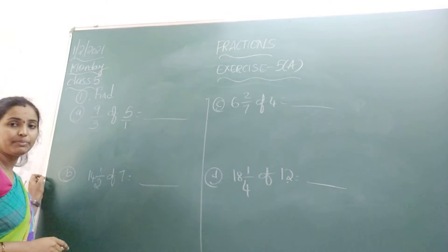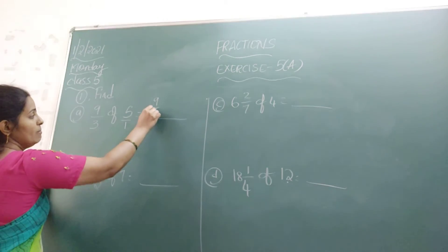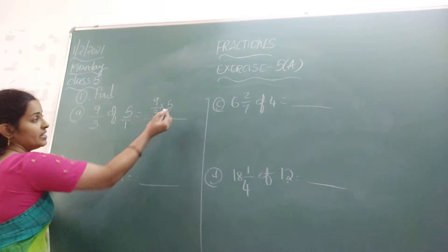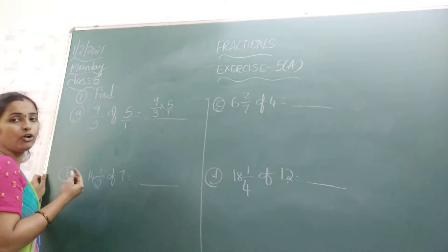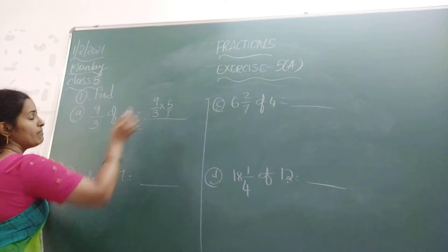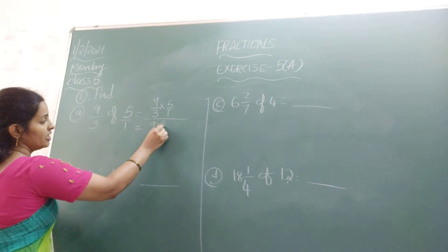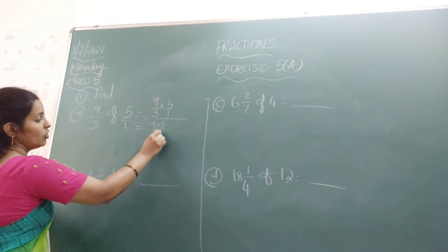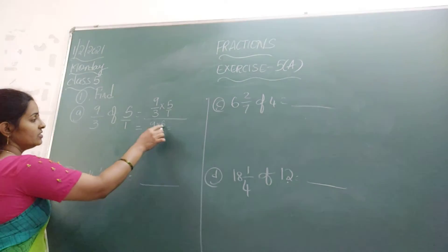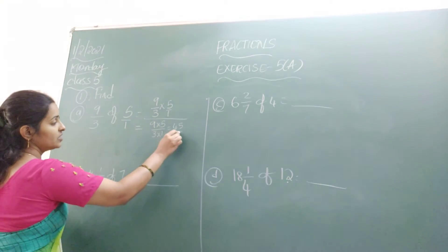Now let us start multiplying. That is 9 by 3 multiplied with 5 by 1. Now multiply numerator by numerator — that is 9 into 5 — and denominator by denominator. So what you will get: 9 into 5 is 45, and 3 ones are 3.